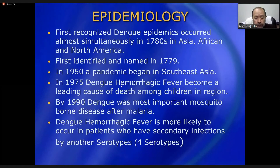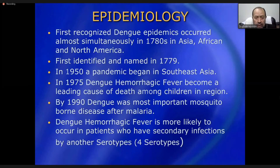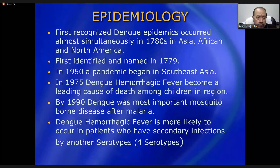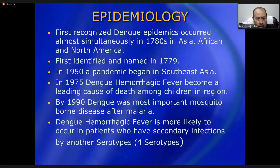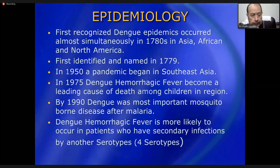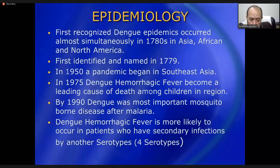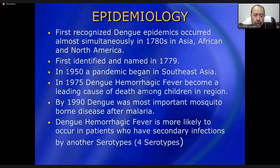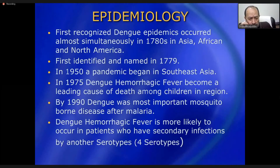In 1945, the pandemic began in Southeast Asia and has been ongoing ever since, with endemic presence in all those areas. Hemorrhagic fever became a leading cause of death among children in this region around 1975. By 1990, dengue was the most important mosquito-borne disease after malaria — the second most important mosquito-borne disease globally.